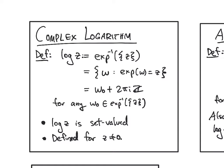Next, we give a name to the inverse images under the exponential map. So the complex logarithm, log z, is defined to be the inverse image of the singleton z under the exponential map. Since the exponential map is never zero, we do have to take z non-zero.